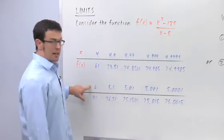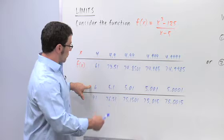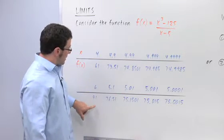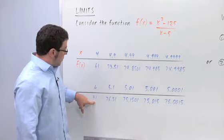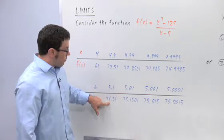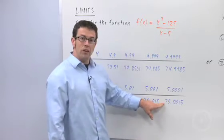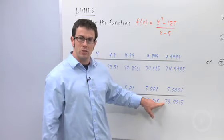Now let's see what happens on the other side. So x is coming in towards 5 from the right now. 6, 5.1, 5.01, what's happening to the outputs? 91, 76.51, 75.15, 75.015. You can see that here as well, the values are getting closer to 75.